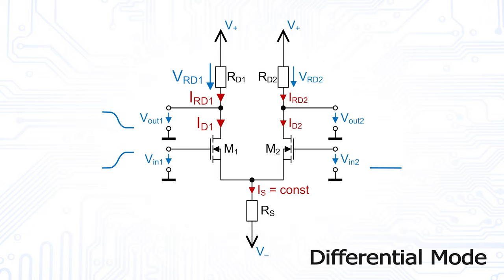As we assumed our current source to be ideal, its current must remain constant no matter what input voltages are applied to the differential amplifier. Therefore, the current through the right half of the circuit must decrease, resulting in a decreased voltage drop across the right drain resistor, which again leads to an increased output voltage at output two.